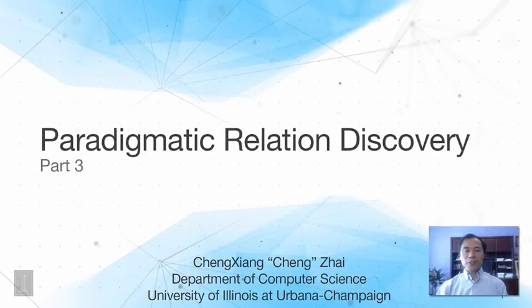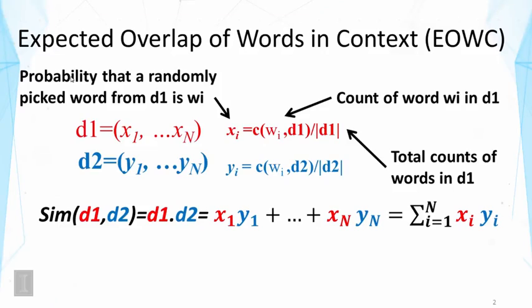In this lecture, we continue discussing paradigmatic relation discovery. Earlier, we introduced a method called expected overlap of words in context.